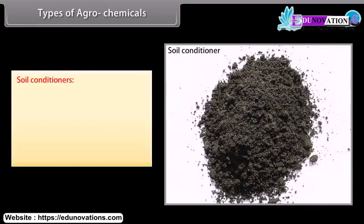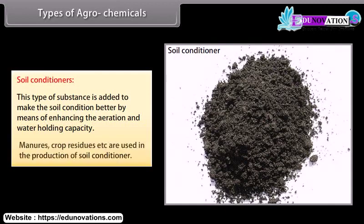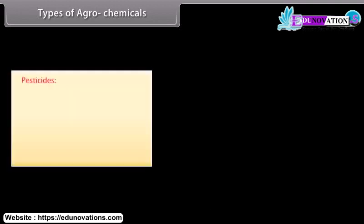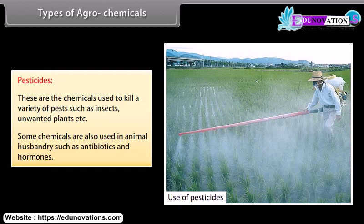Soil conditioners are substances added to improve soil condition by enhancing aeration and water-holding capacity. Manures, crop residues, etc. are used in the production of soil conditioners. Pesticides are chemicals used to kill a variety of pests such as insects, unwanted plants, etc. Some chemicals are also used in animal husbandry, such as antibiotics and hormones.